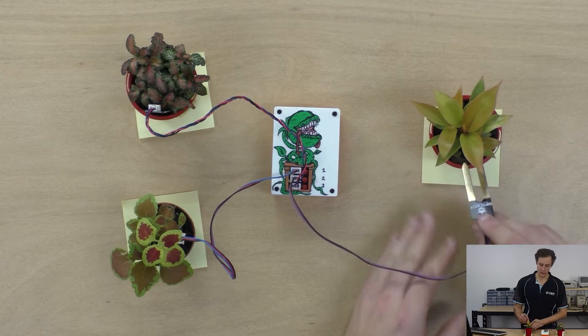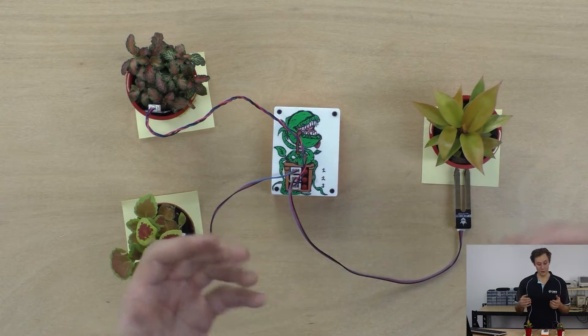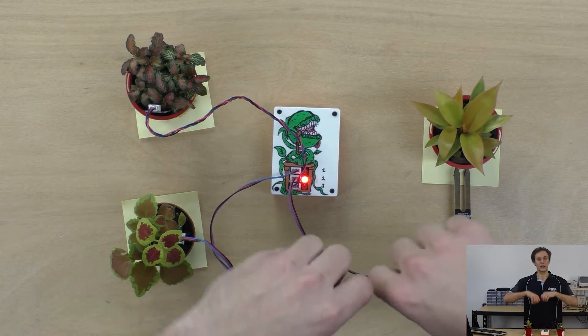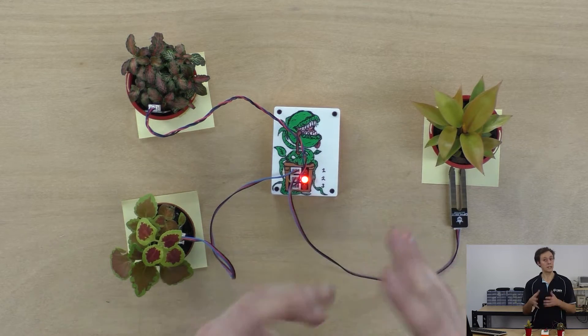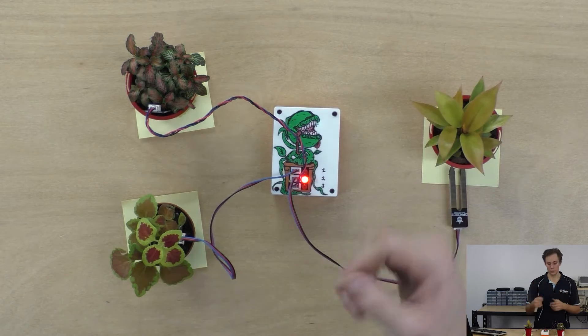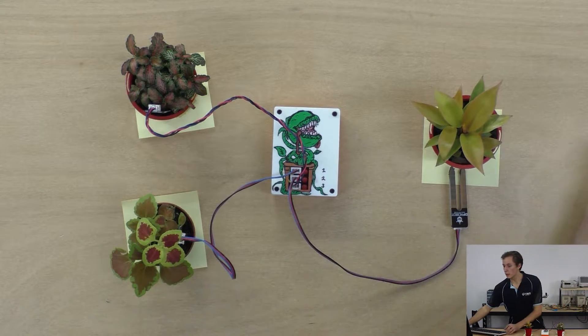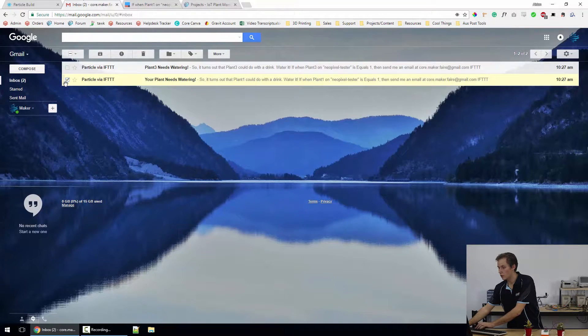So I'll unplug this sensor and this is simulating a plant that is very very dry needs a lot of water because these guys have just been watered and you can see now it's reset and it does that every 10 seconds this LED is going to stay on for 10 seconds so you get that visual notification which is pretty cool and then it's going to shoot through an email.